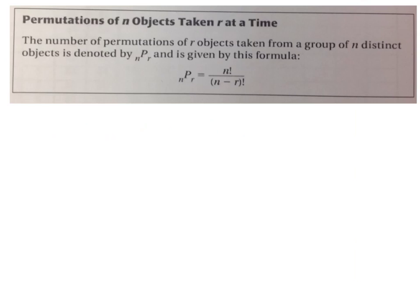So that's where this formula comes in. The permutations of N objects taken R at a time. The number of permutations, remember that means the order matters, of R objects taken from a group of N distinct objects, that's just like what we just did with 3 places out of 8 teams, is denoted by NPR. So here's one you need to know: NPR equals N factorial over N minus R factorial.